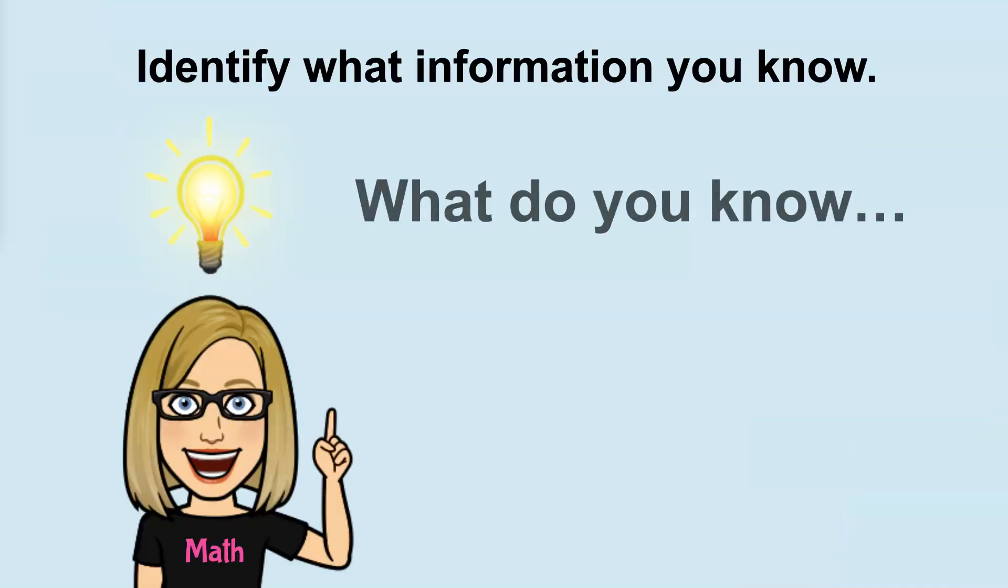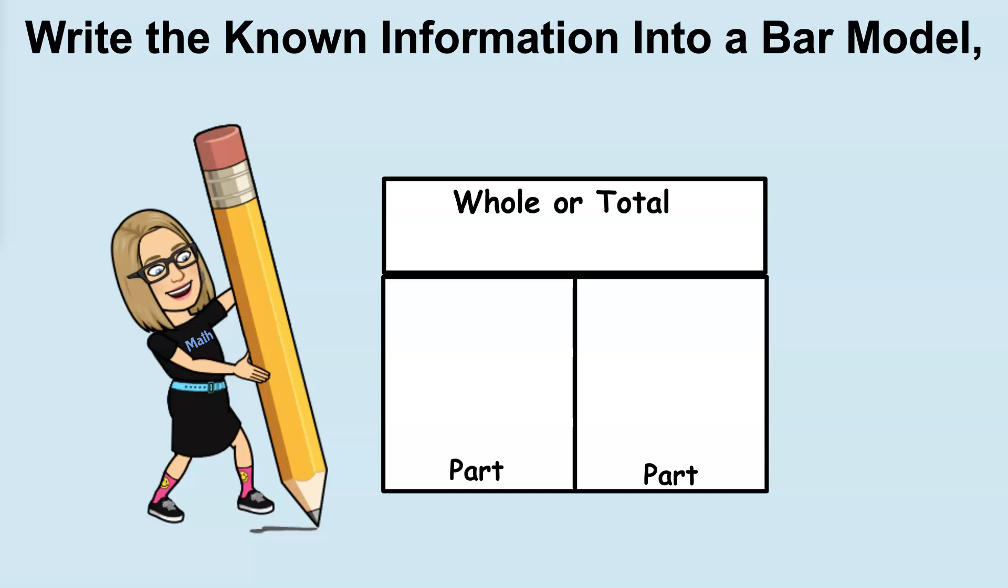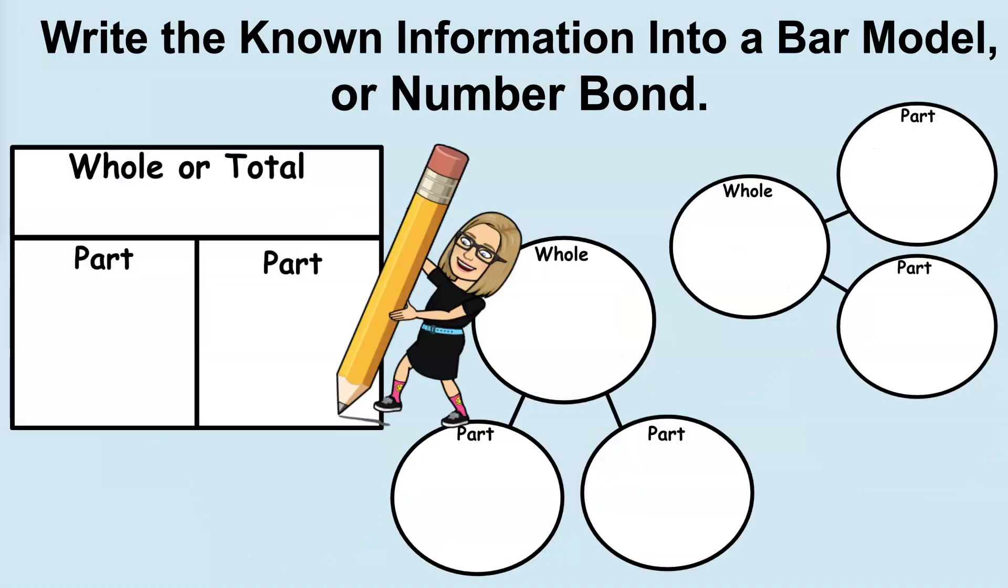Next, identify what information you know. What do you know? The whole or total? One part? Two parts? Write the known information into a bar model or a number bond. All of these, a bar model or a number bond, not only records the known information, but is a clue that helps you to proceed to find the missing part. I will be using a bar model because it's easier for me to draw, but any of these models will work.